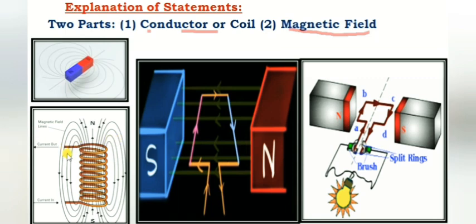With AC current — alternating current — alternating current produces flux that alternates, meaning it changes. Electromagnets have a higher flux density, so practically we use electromagnets.